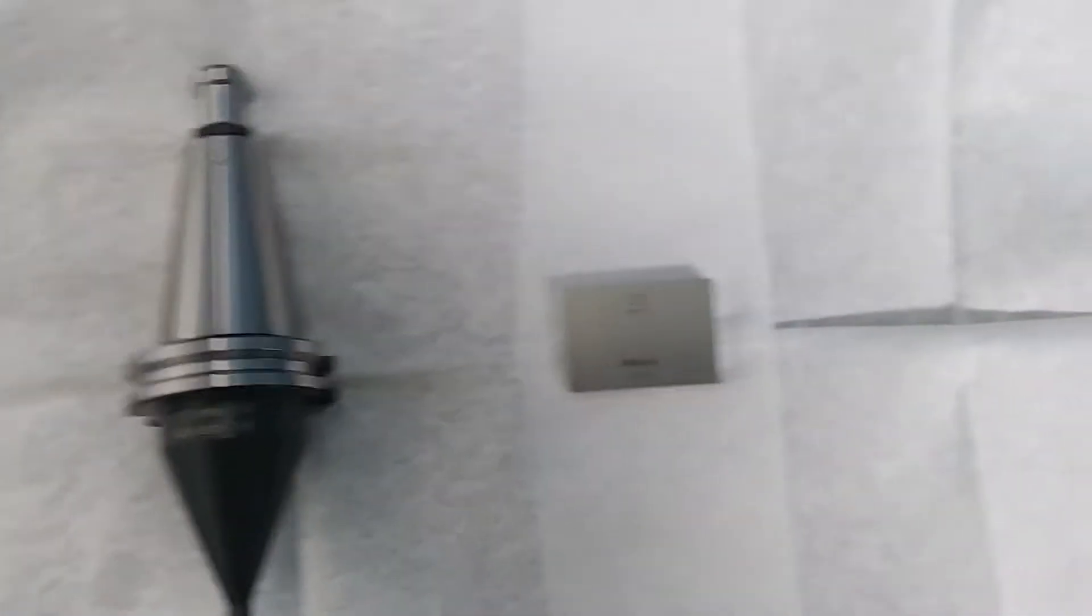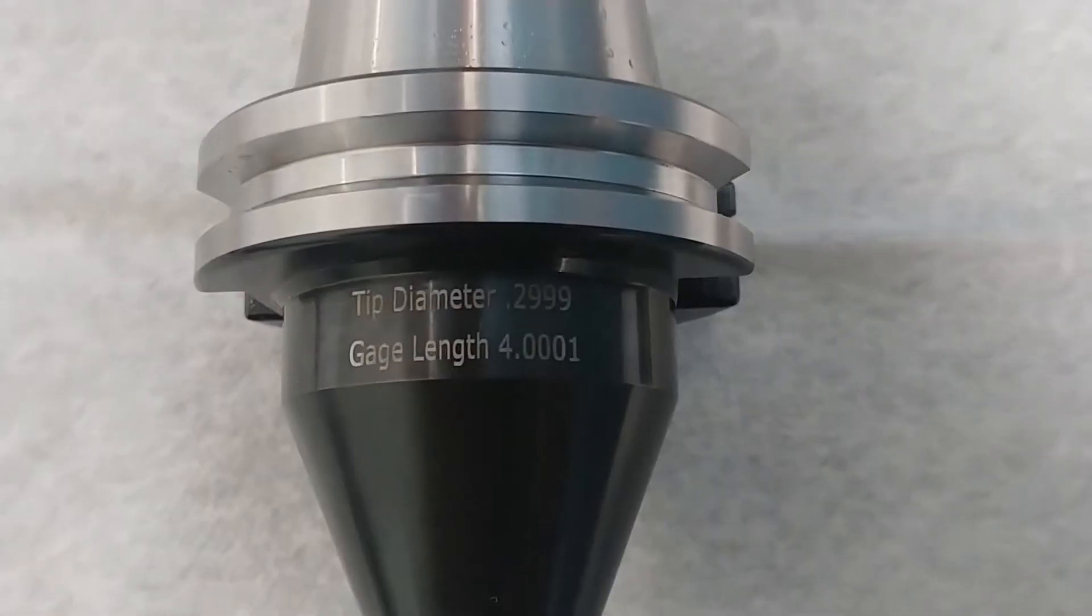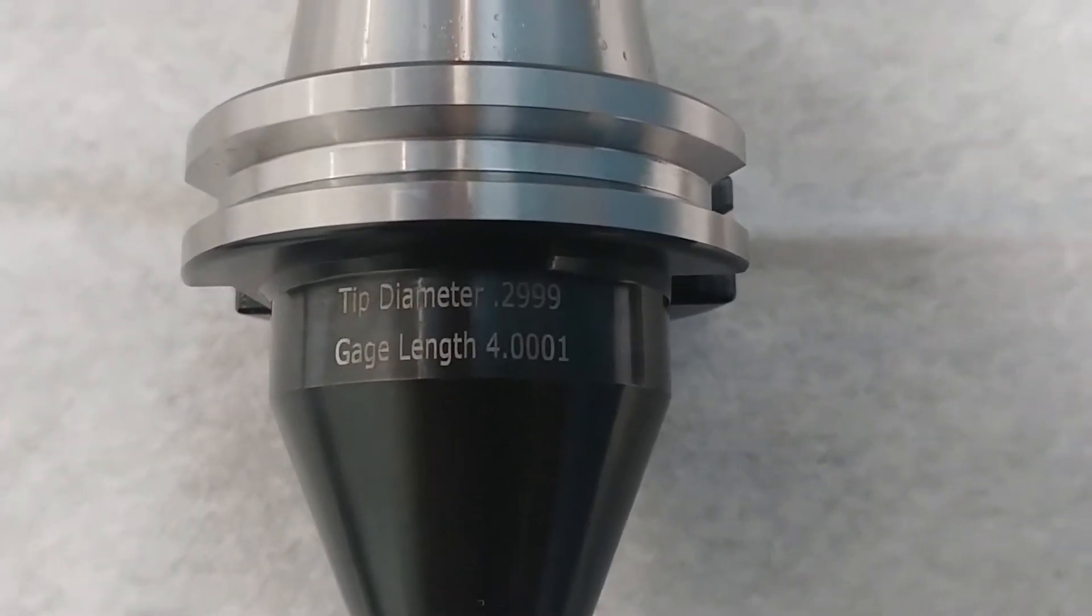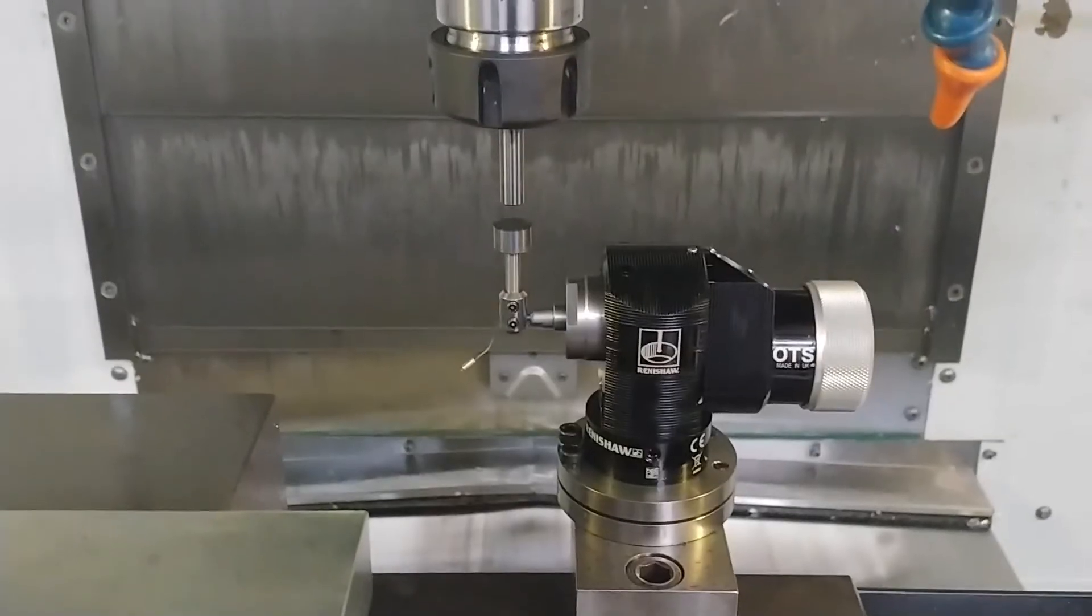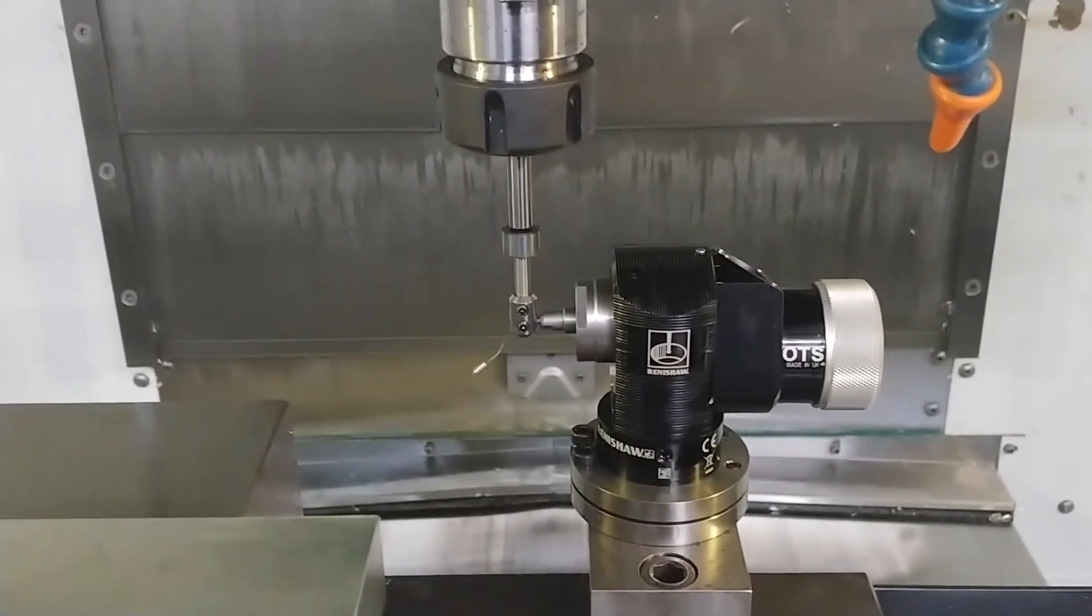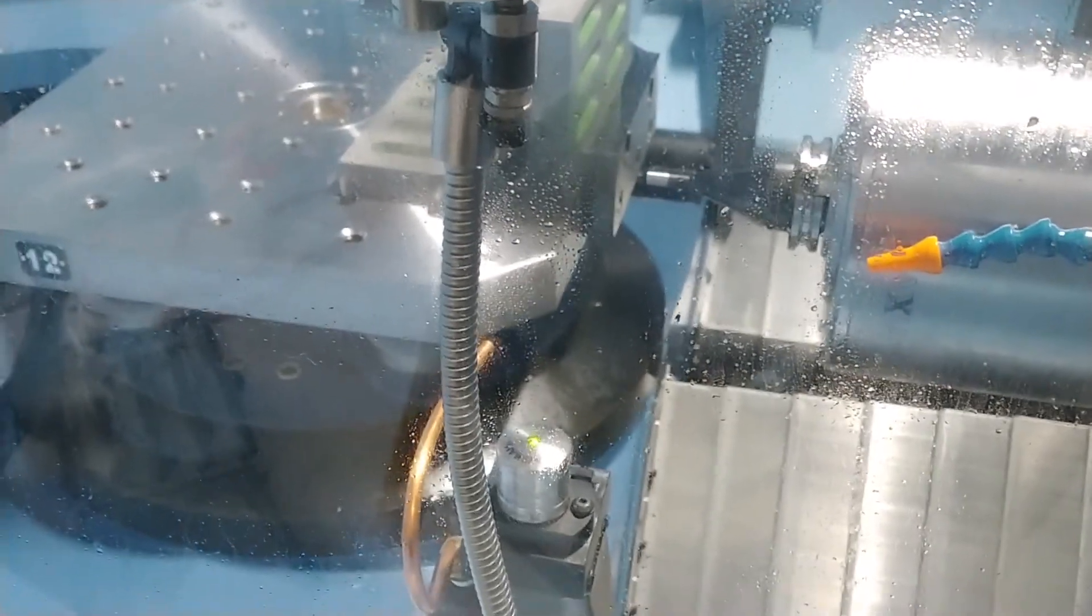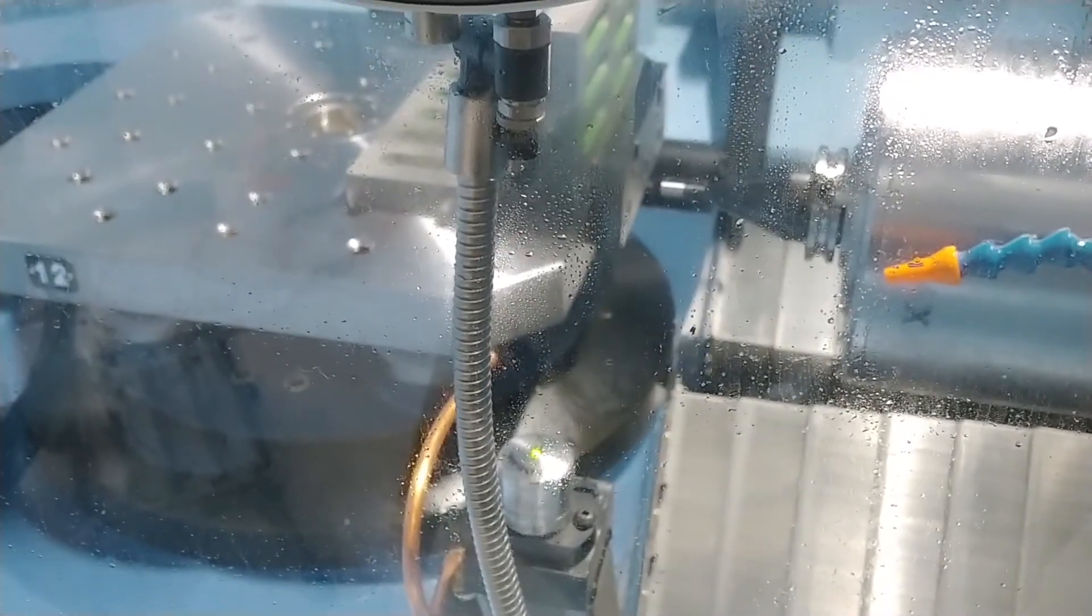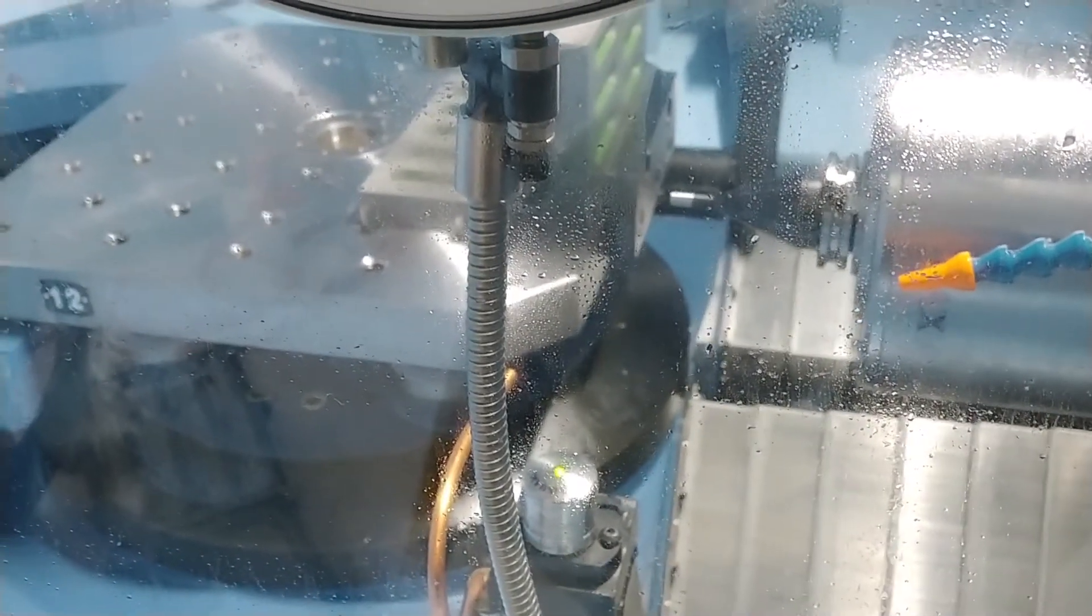Obtain a master tool and a gauge block. A master tool has a known tool length from the spindle taper gauge line and a known diameter. If your machine has a touch tool setter or a laser tool setter, it is important to calibrate the probe with the same master tool used to calibrate the tool setter.